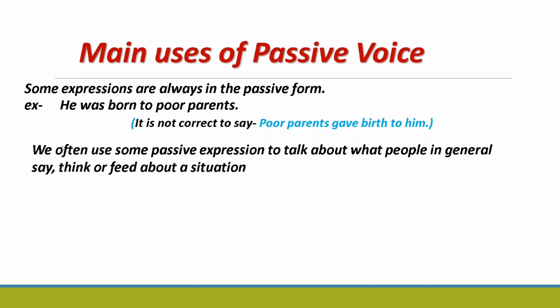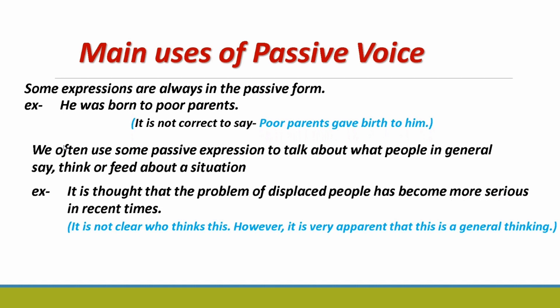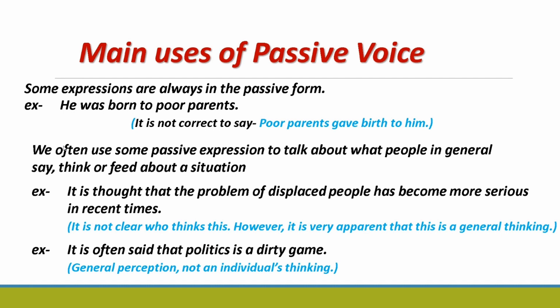We use passive constructions when people in general hold a view. For example: 'The problem of displaced people has become more serious in recent times.' It is not clear who specifically thinks this; however, it is very apparent that this is general thinking. Another example: 'It is often said that politics is a dirty game.' This is a general perception, not an individual's thinking.